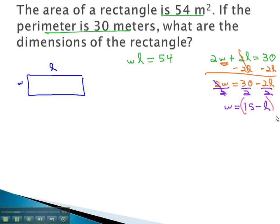If w is 15 minus l, we can replace the w in the other equation with this expression: (15 - l) times l equals 54. We can start solving by distributing the l, giving us 15l - l² = 54.